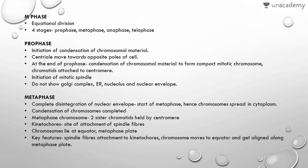This division is not a clear-cut one; it is just for understanding purposes. In prophase, initiation of condensation of chromosomal material takes place and the centrioles move towards the opposite poles of the cell. At the end of prophase, condensation of chromosomal material forms a compact mitotic chromosome. Chromatids are attached to the centromere, and initiation of the spindle apparatus occurs. The cell no longer shows any Golgi complex, endoplasmic reticulum, nucleolus, or nuclear membrane.